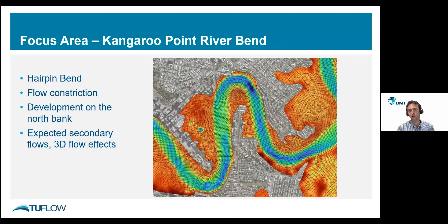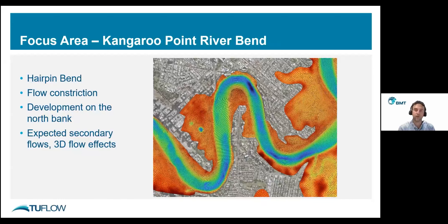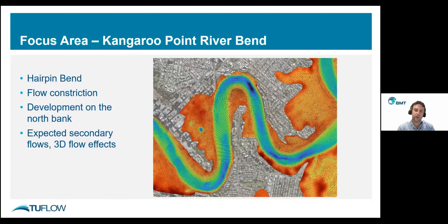For this study, I've focused on one region of the model — a hairpin river bend located to the north of Kangaroo Point. This location was selected because it generates hydrodynamic complexities, it is a point of flow constriction with high current speeds, and an extensive amount of development has been completed on the north bank. It can be expected that river dynamics here would include secondary flows and thus strong 3D flow effects.